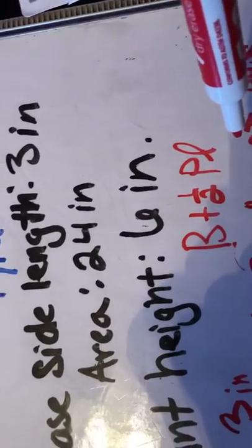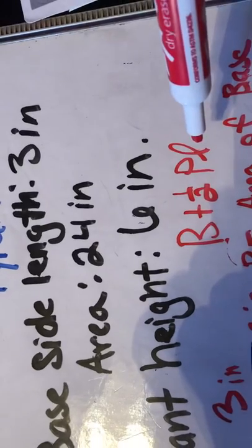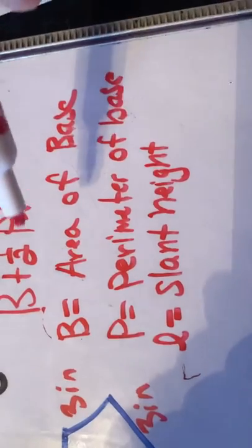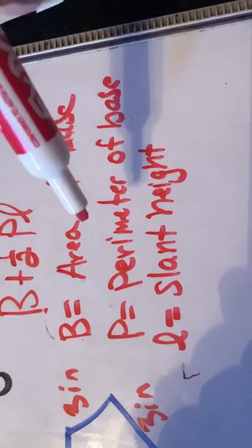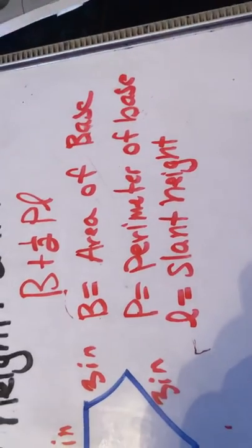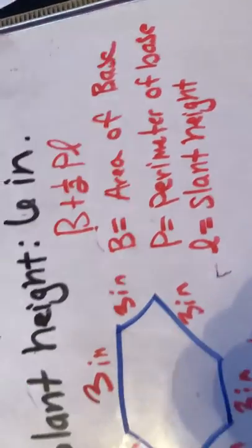So the formula we're going to be using is B plus 1 half times P times L. B is the area of the base, P is the perimeter of the base, and L is the slant height. They pretty much give you almost all that information.